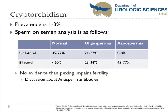Cryptorchidism has a prevalence of about 1–3%. Results on semen analysis differ between unilateral and bilateral cases. In unilateral cases, 35–72% are normal, 20% are oligospermic, and less than 10% are azoospermic. Bilaterally, the results shift: only 20% or less have normal semen analysis, 20–30% are oligospermic, and 40–75% have azoospermia. Importantly, even in a unilateral process, there are bilateral changes in pathology and physiologic functioning of spermatogenesis.